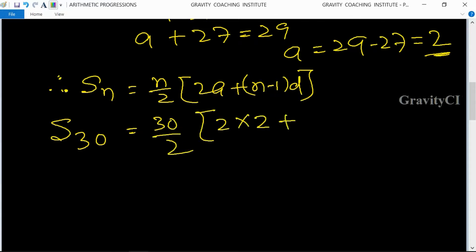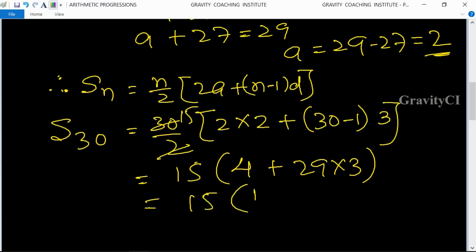2 into 2 plus 30 minus 1 into 3, equals 15 times 4 plus 29 into 3, equals 15 into 91. So S30 equals 1365, answer.